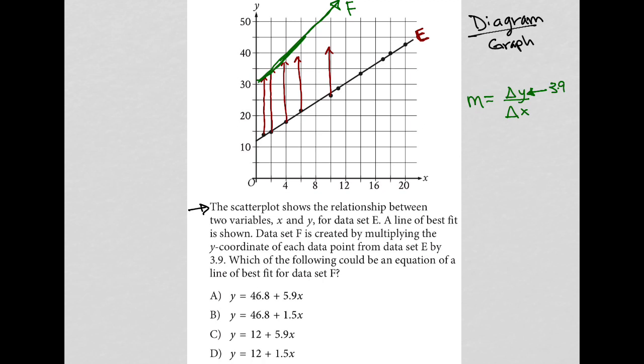So then it says, which of the following could be an equation of a line of best fit for data set F? All right, so data set F, I'm going to do it all in comparison to data set E. So data set E has a Y intercept. Because I'm looking at lines, I'm thinking about Y equals MX plus B.